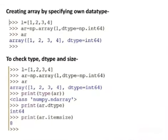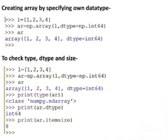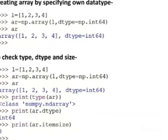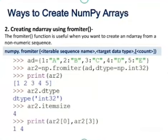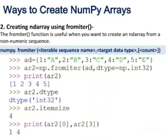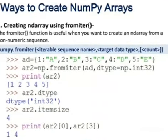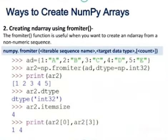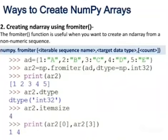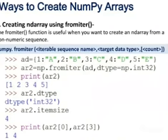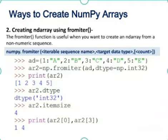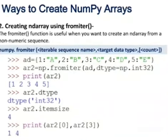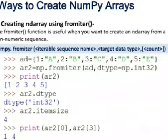Another way is the fromiter method. Fromiter method is used to create ndarray from non-numerical sequences. Non-numeric means which has numericals as well as alphabets, meaning alphanumerical sequences. Here you can see that we have created one array ar2 of size 5.